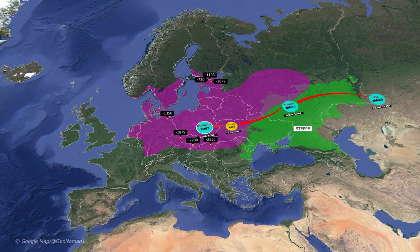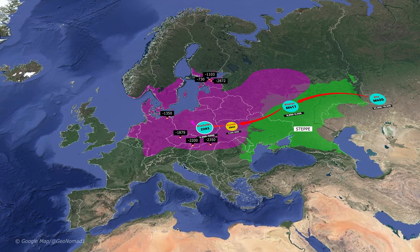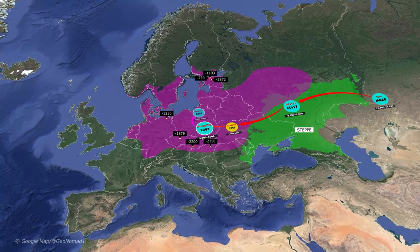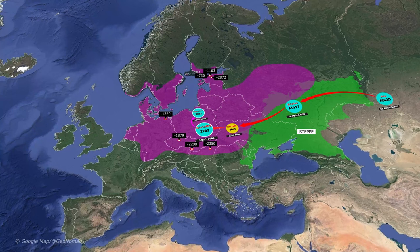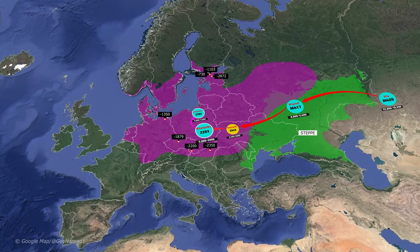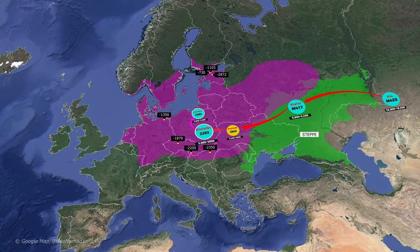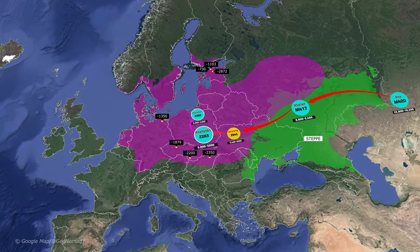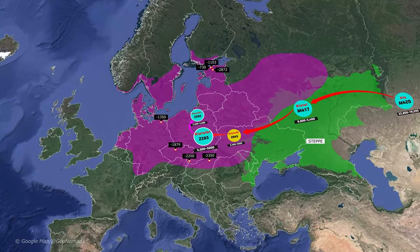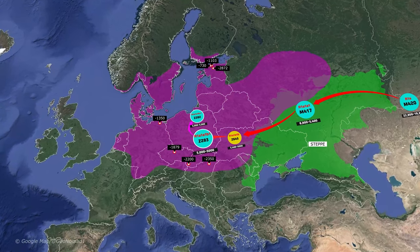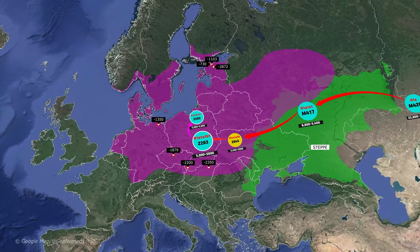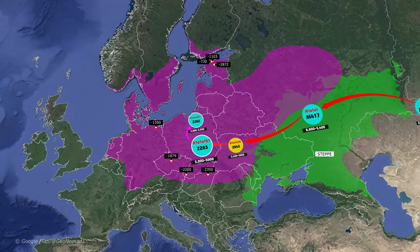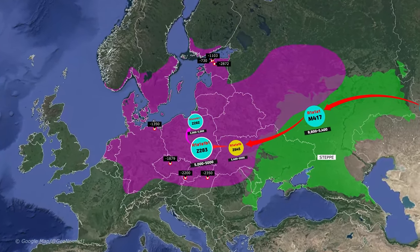Branches of Z283 include Z282 and YP4758. Z282 plays an essential role in diffusion. Major branches belonging to Z282 include Z284, HIM458, and Z283.